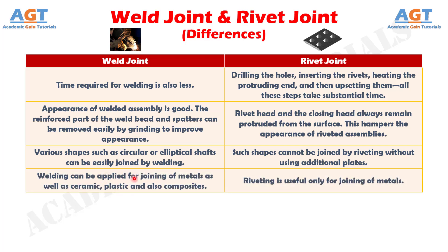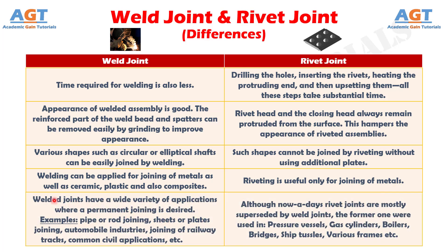Number 14: welding can be applied for joining of metals as well as ceramic, plastic and also composites, whereas riveting is useful only for joining of metals. And difference number 15: welded joints have a wide variety of applications where permanent joining is desired — examples include pipe or rod joining, sheets or plates joining, automobile industries, joining of railway tracks, common civil applications, etc. — whereas, although nowadays rivet joints are mostly superseded by weld joints, the former were used in pressure vessels, gas cylinders, boilers, bridges, ship hulls, and various frames.